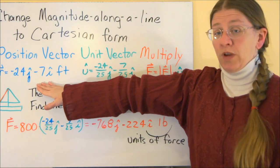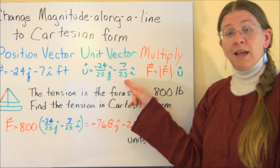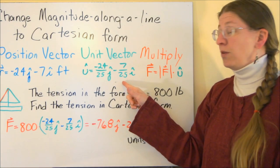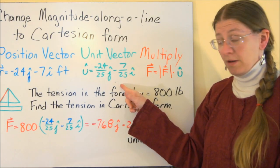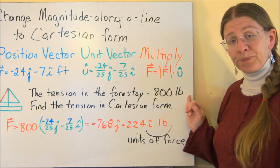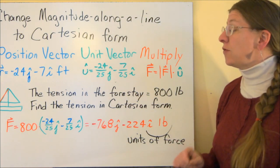So this is my position vector. That's the forestay that goes from here to there. This is the unit vector. This is divided by its magnitude, so you have a unit. This is pure direction. Now, if I tell you that the tension in that forestay is 800 pounds, I want to know what the force vector is. The force vector needs to have units of force.